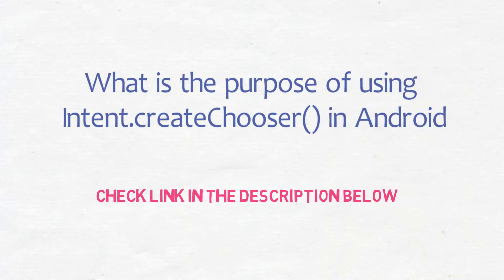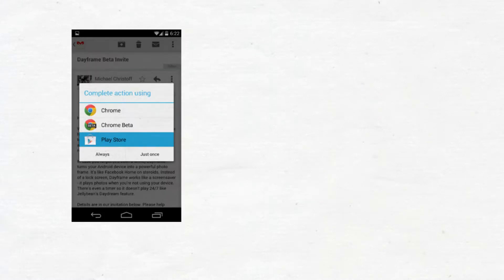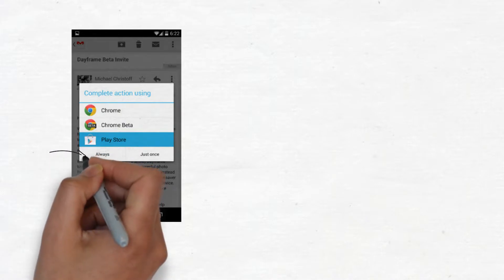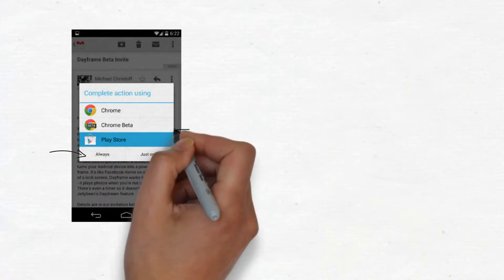You might have seen that if there's more than one activity on your device that's capable of receiving your Intent, Android automatically asks you to choose which activity you want to use. It even asks you whether you want to use this activity all the time or just on this occasion.